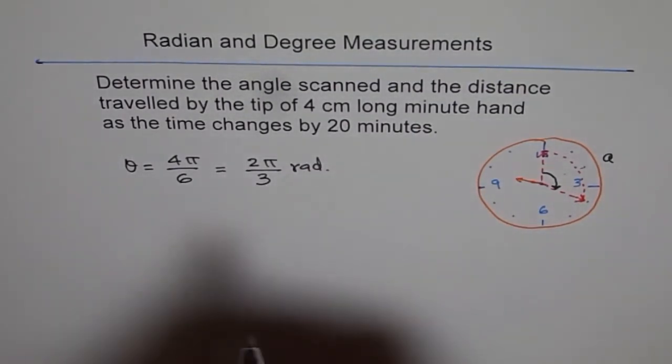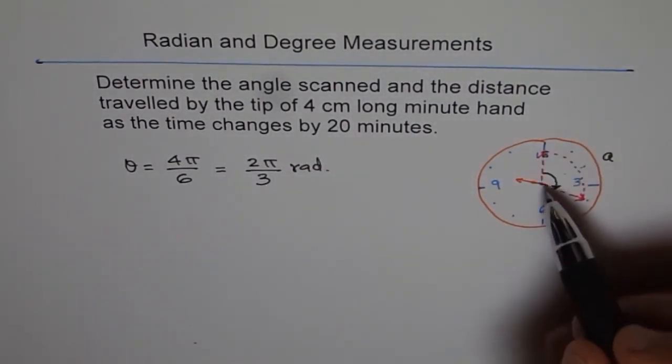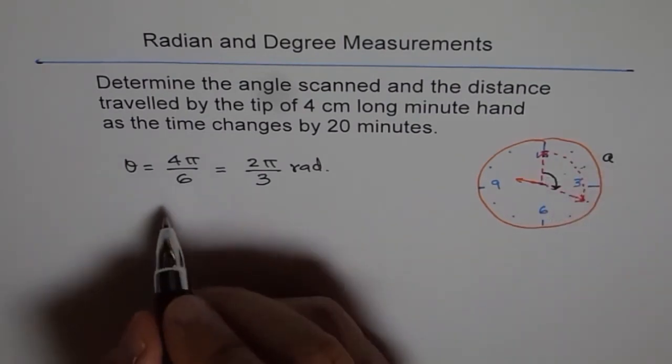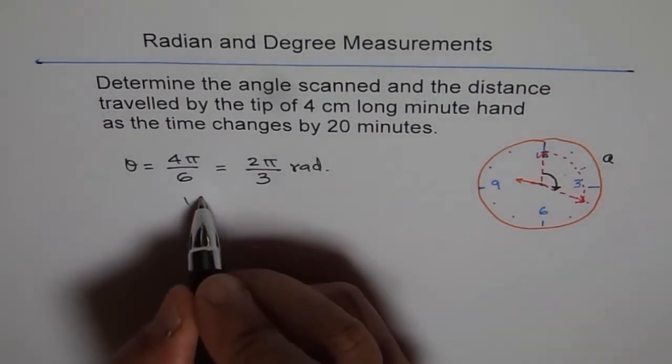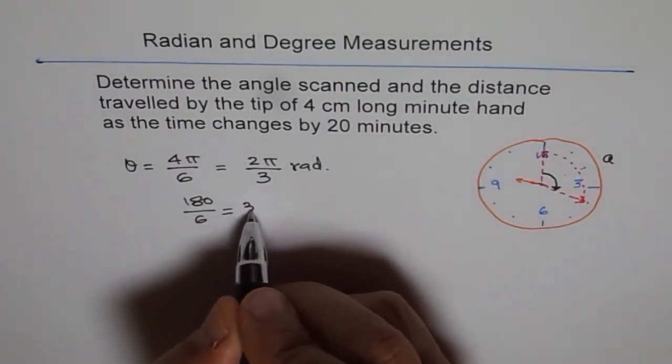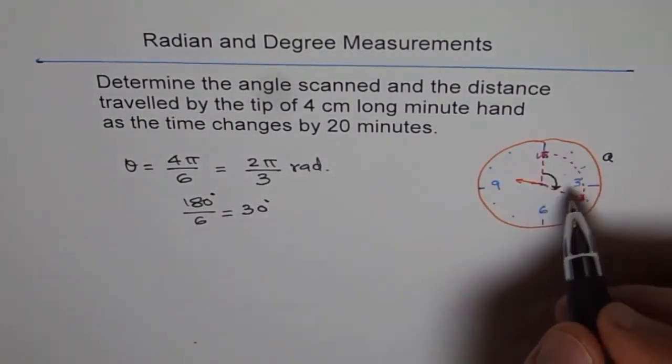Now, if you want to do it in degrees, then we know this is 180 degrees, which is divided by 6. So, 180 divided by 6 is 30 degrees.